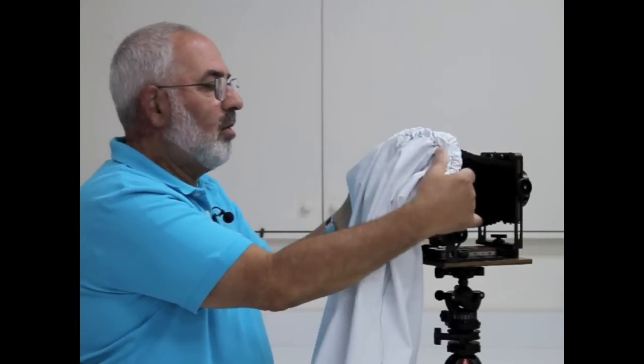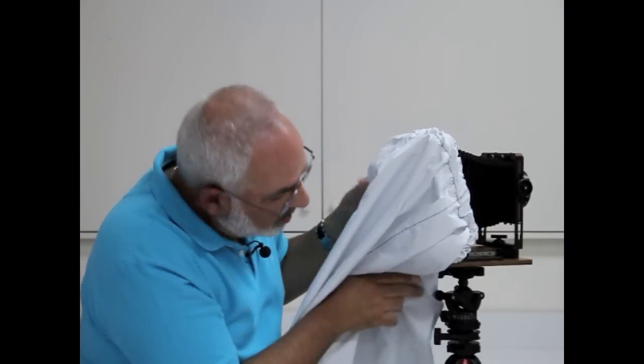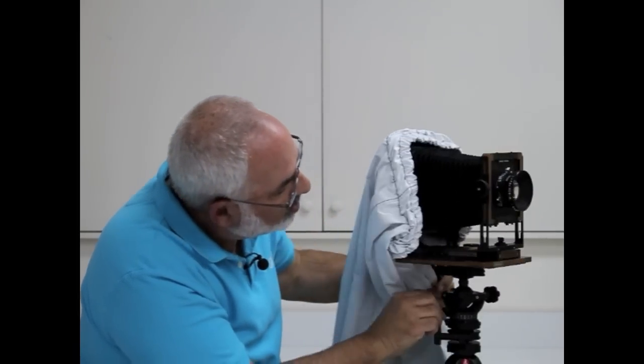So when you attach the focusing hood, I would loop it around the top. And loop it around the front of here, around these two little knobs. Let me just show you right here. These two little knobs right here.